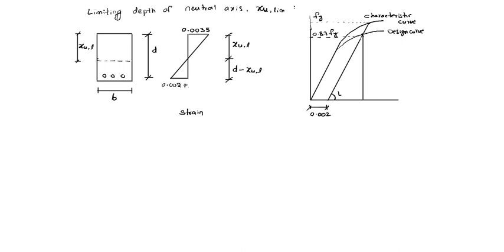This slope is Young's modulus of steel. This is the stress-strain diagram — stress on one axis, strain on the other. The opposite side is 0.87 FY divided by strain, which equals Young's modulus. So the strain here is 0.87 FY by ES. That is why the maximum allowable strain is 0.002 plus 0.87 FY by ES.